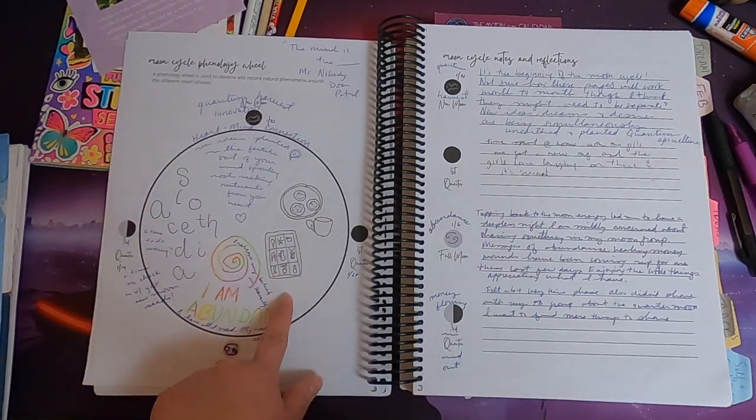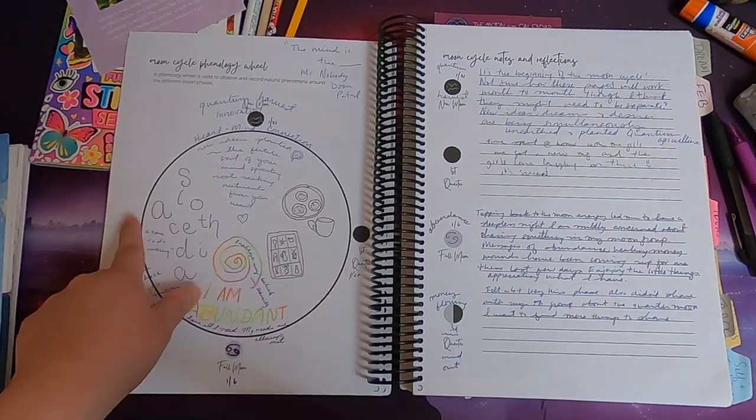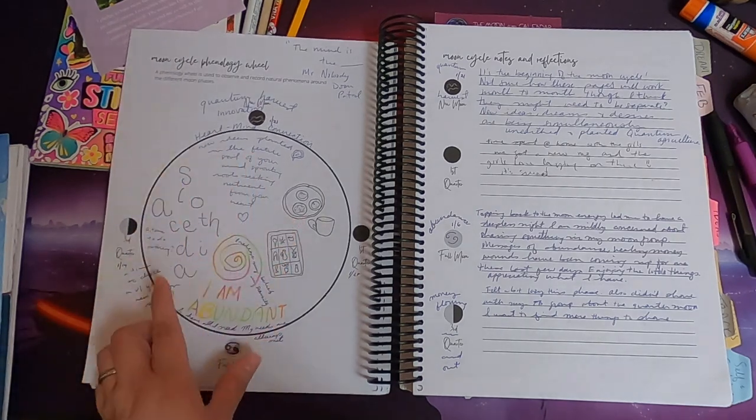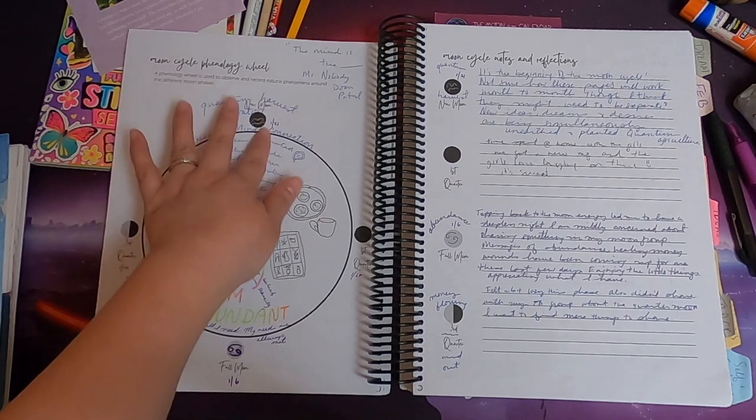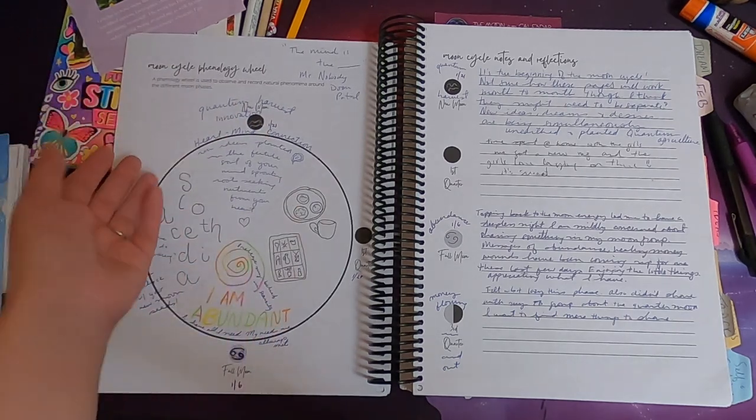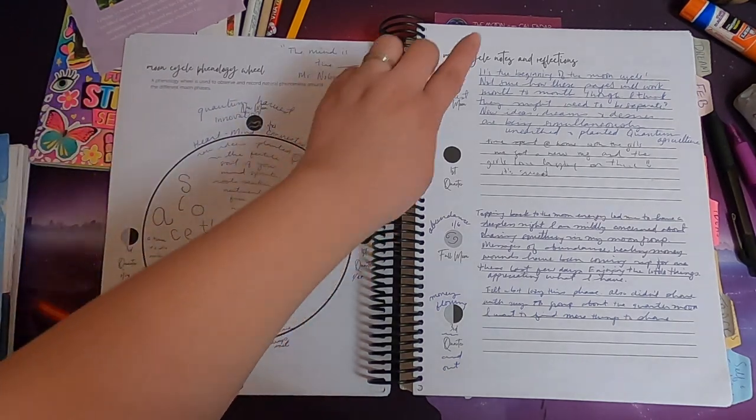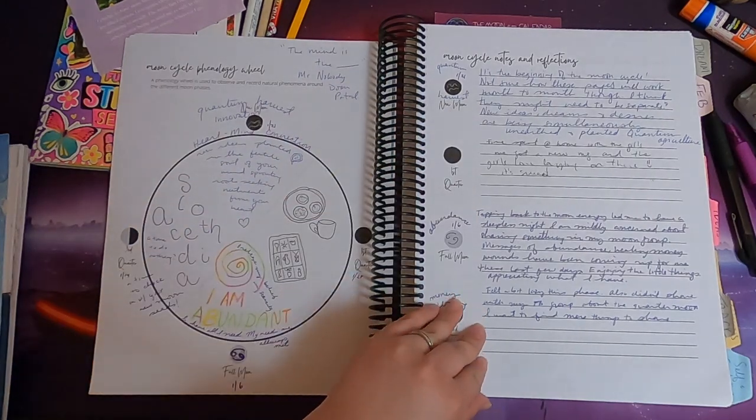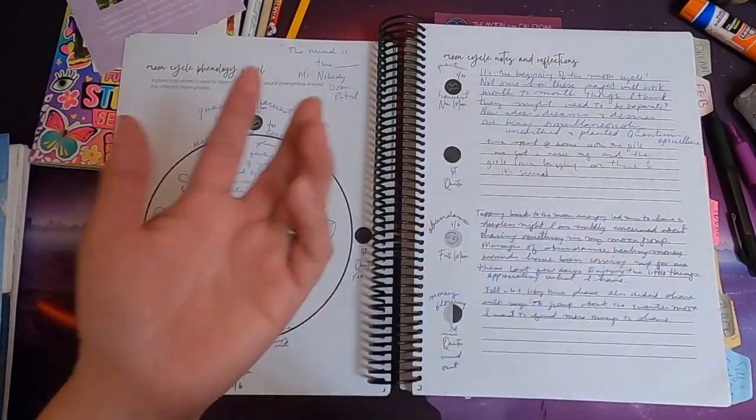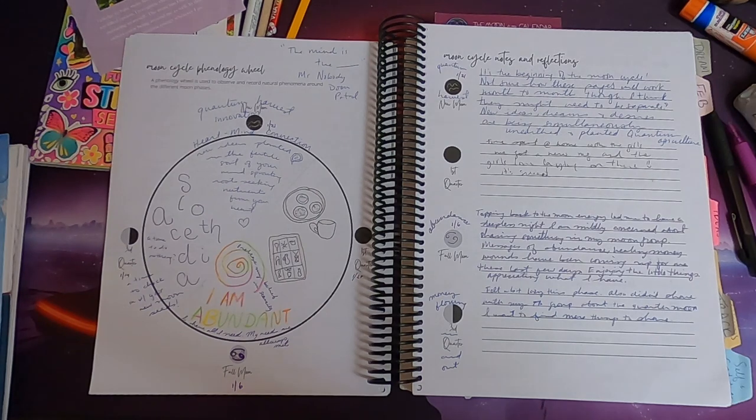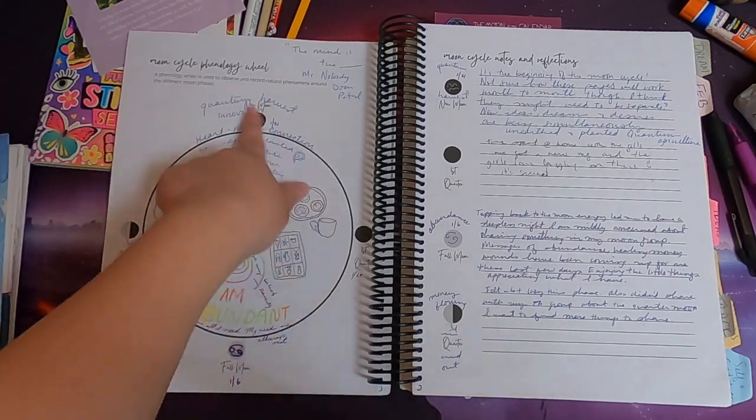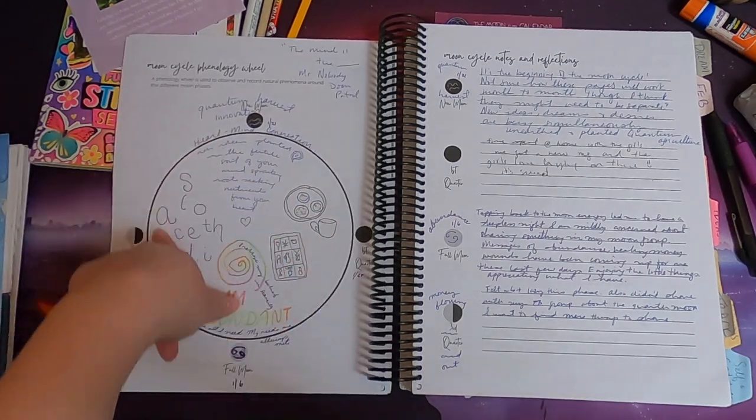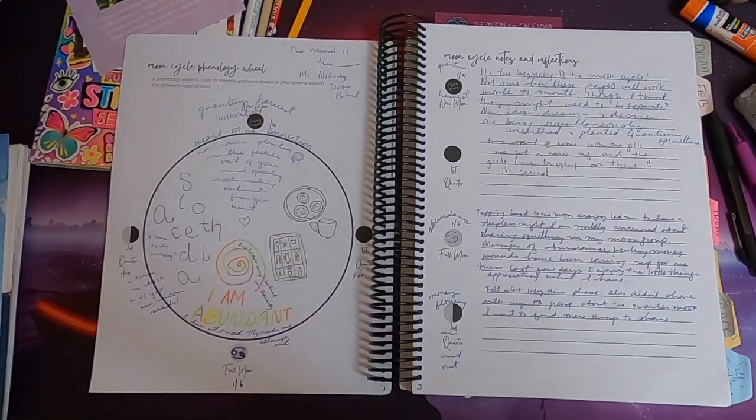Then this is the moon cycle phenology wheel and it has the major phases of the moon so you can doodle, you can do some journaling, whatever you feel like doing for that particular phase. There's also a spot for you to take notes if you want to do a traditional phenology wheel. Maybe you pick something out in nature that you are going to track and just draw a picture of a flower or a weed or a tree and just record how it's changing throughout the month.